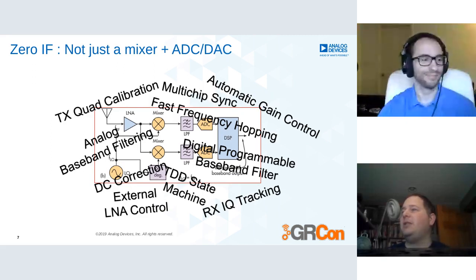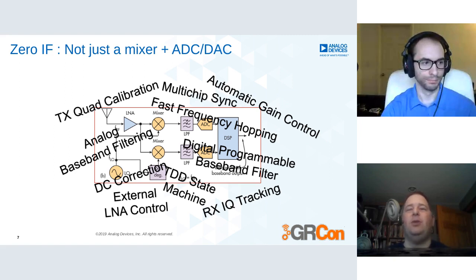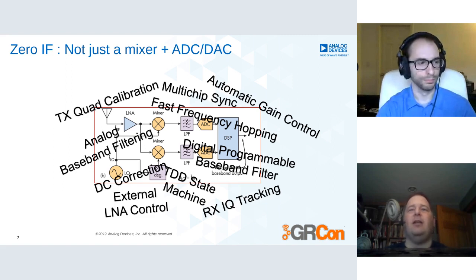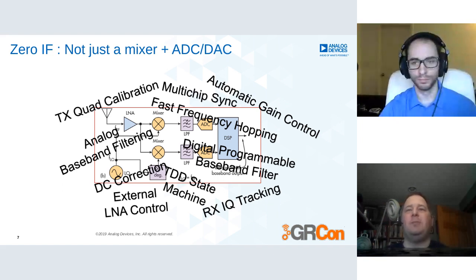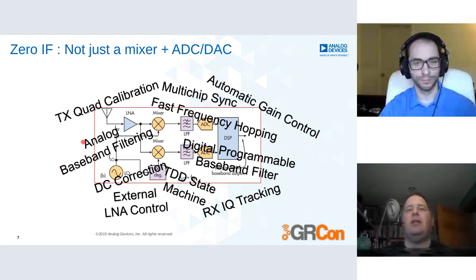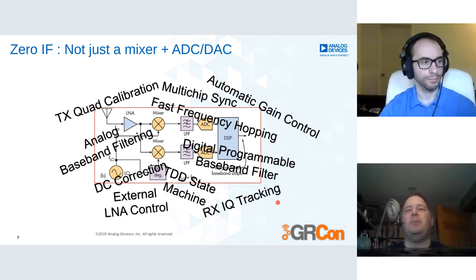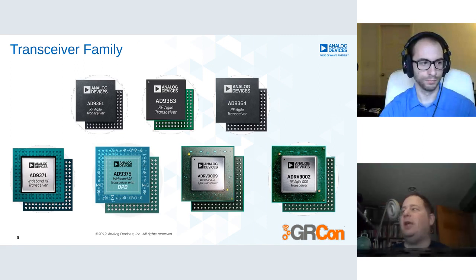When we talk about zero-IF — which is the architecture inside the Pluto, the E310, the LimeSDR, the RTL-SDR, and all these medium-performance kinds of radios — there's a variety of things going on: TX quad cal, baseband filtering, DC correction, LNA control, IQ tracking. It's more than just what's on the block diagram; it's all the different things making the block diagram work.